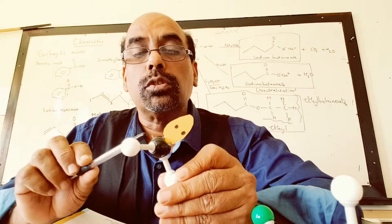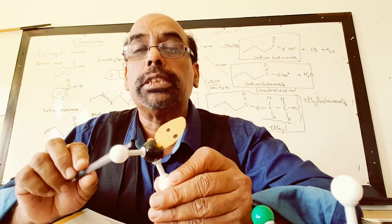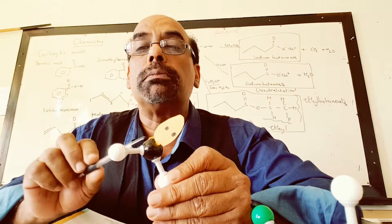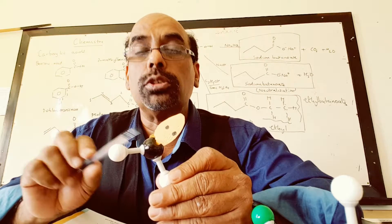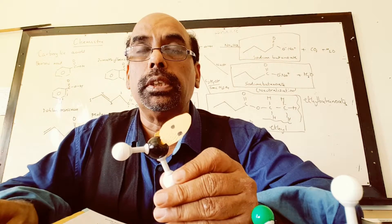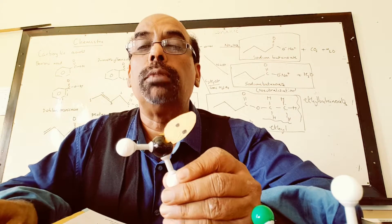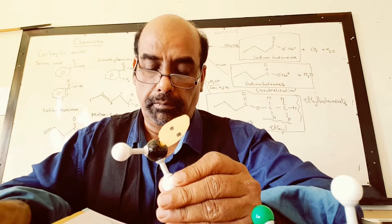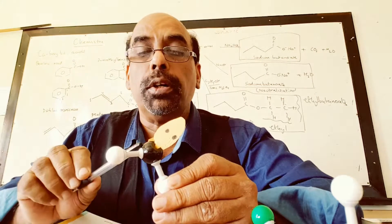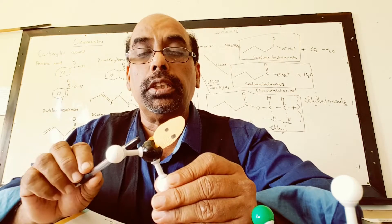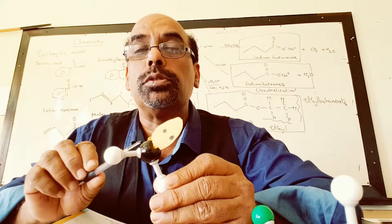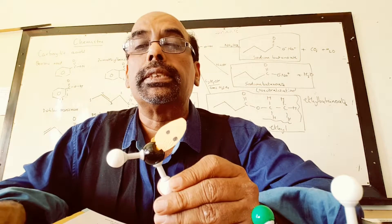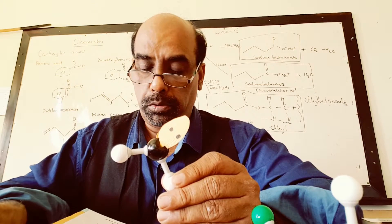The bond between oxygen and hydrogen is called the O–H bond. There are two O–H bonds in a water molecule. The bond energy — the energy required to separate these two atoms — is 460 kJ per mole.